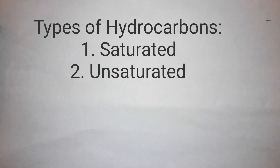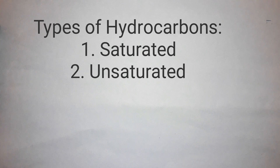Saturated hydrocarbons are a group of hydrocarbons that have at least a single covalent bond in between two adjacent carbon atoms. While unsaturated hydrocarbons have either a double or a triple covalent bond in between two adjacent carbon atoms.